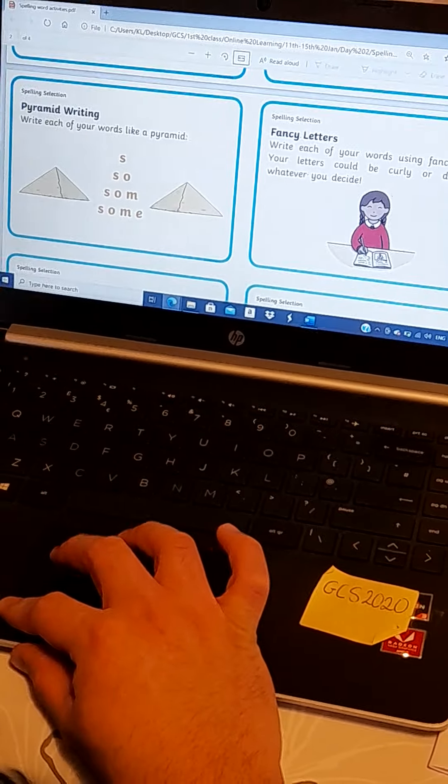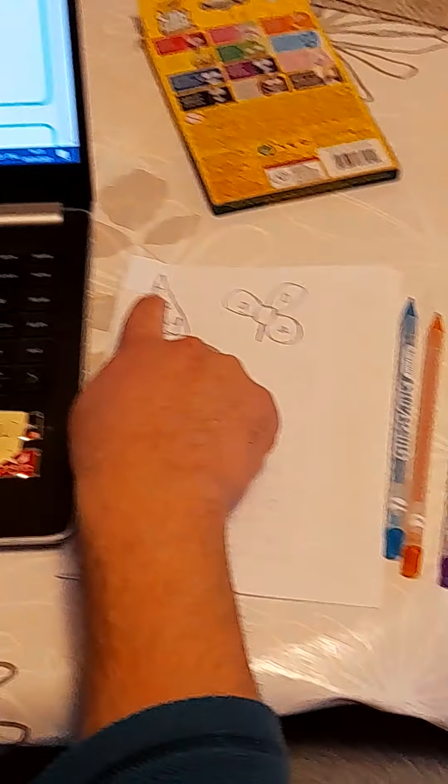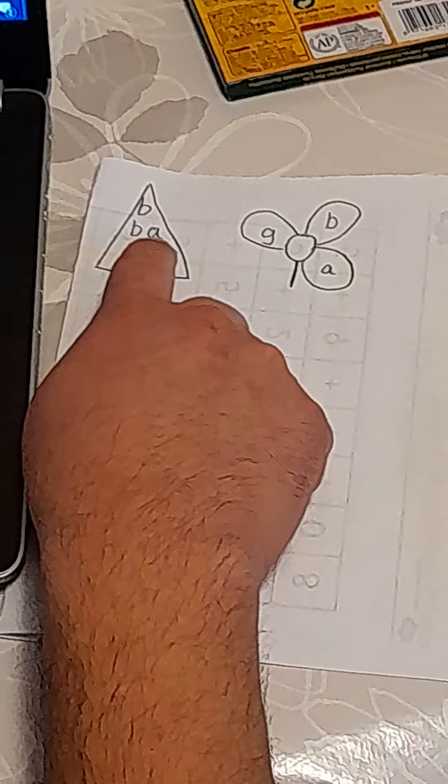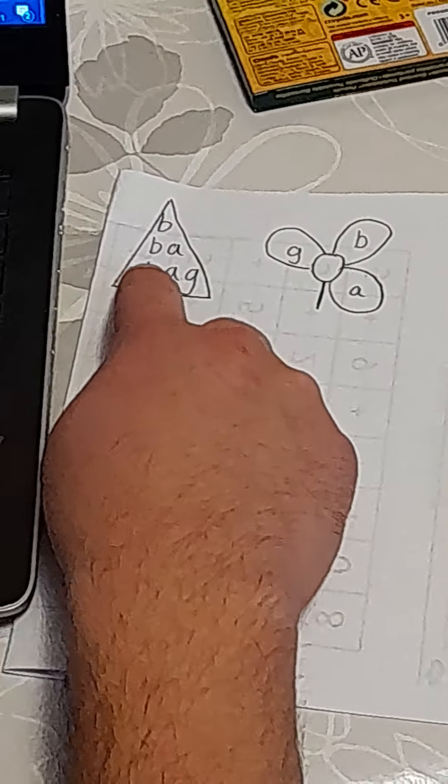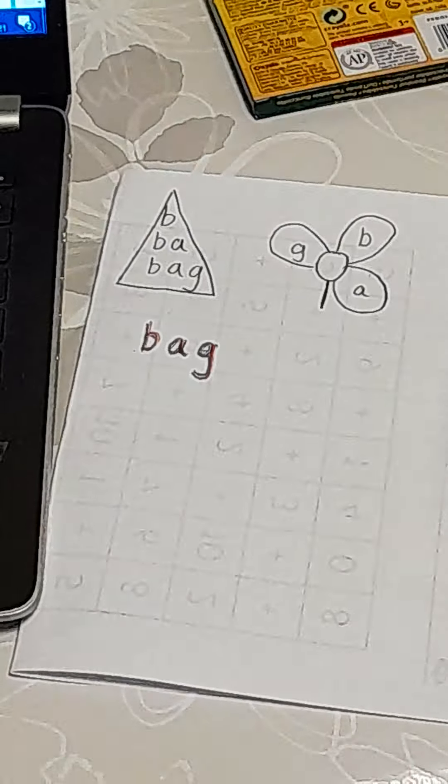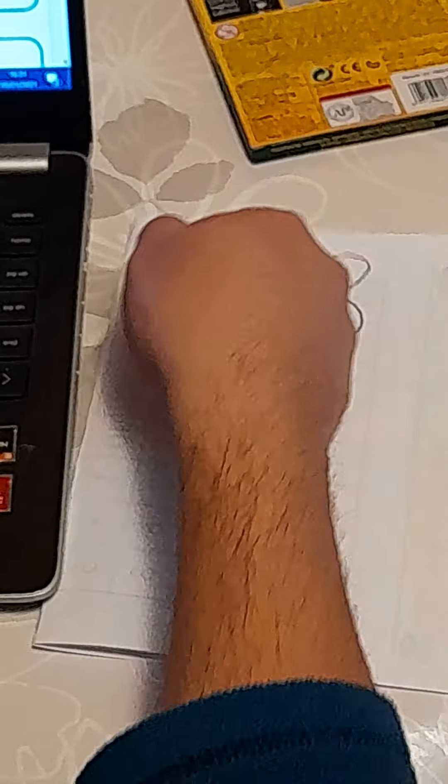Another one we've done is the pyramid writing. So starting off writing the first letter, followed underneath by the first and second. Underneath that, first, second, third, until you've spelt out your whole word and draw a little triangle around the outside.